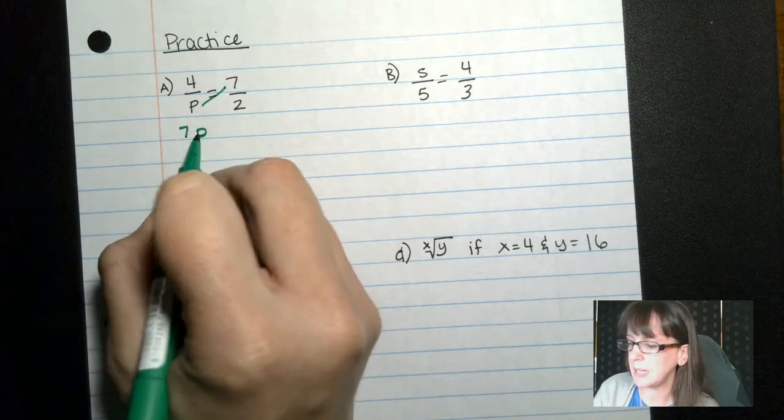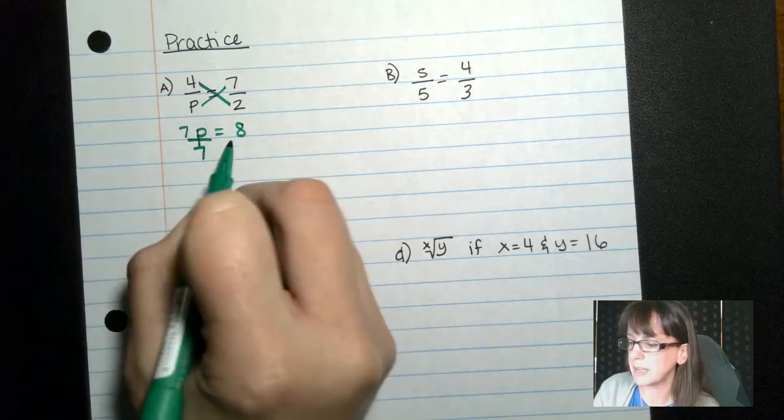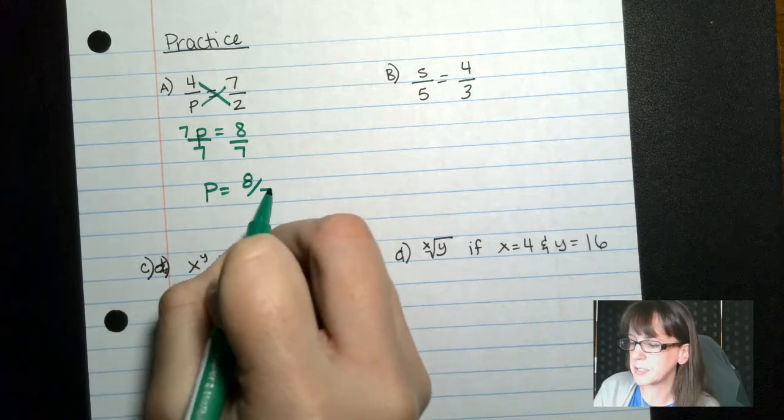We get 7p equals 4 times 2 would give me 8. Divide both sides by 7. 7p equals 8 over 7.